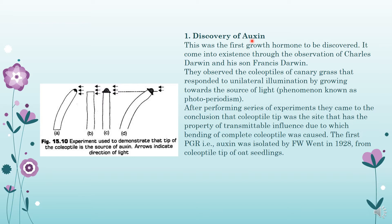The bending of the shoot system takes place because of the action or the production of auxin. Because of the production of auxin, the rate of cell division increases and due to which the bending of the shoot system towards the source of light takes place. After performing a series of experiments, they came to the conclusion that the coleoptile tip was a site that has the property of transmittable influence due to which bending of the complete coleoptile was caused. The first plant growth regulator, that is auxin, was isolated by F.W. Went in the year 1928 from the coleoptile tip of oat seedlings. What we see is that auxin basically helps in the elongation of the shoot system of the plant.